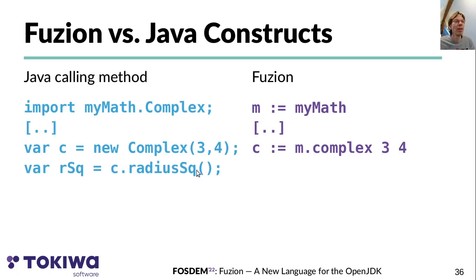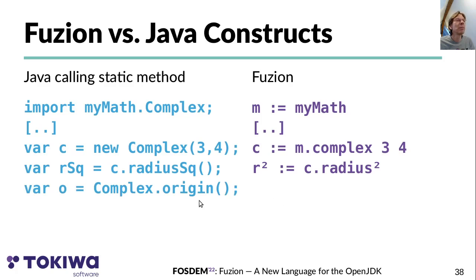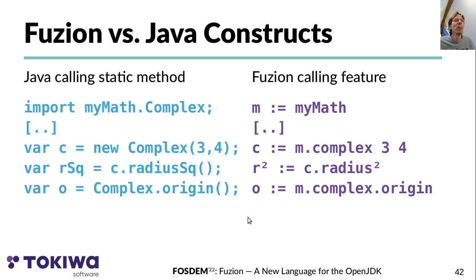Calling a method in Java corresponds to calling a feature in Fusion and looks very similar — parentheses are again not needed. Calling a static method in Java requires going through the unit feature defined for static methods, but since we defined an alias feature for that, we can just write 'complex m.complex.origin' in this case.